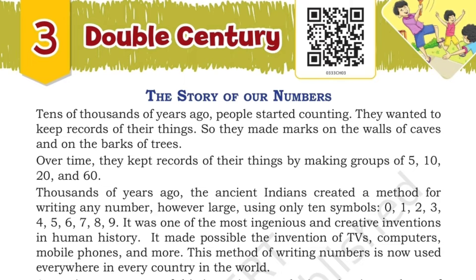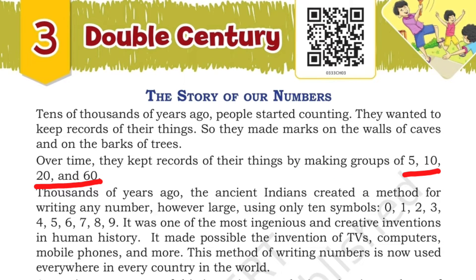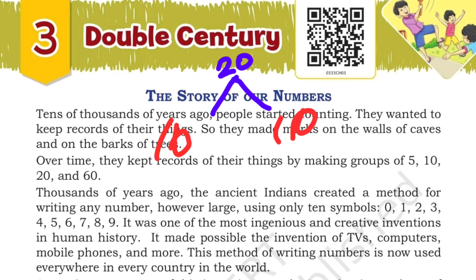Over time, they kept records of their things by making groups of 5, 10, 20, and 60. As time passed, they got many animals and found it difficult to count them one by one. So they divided them into groups of 5, 10, 20, and 60 — making counting very easy. For example, if they had 20 cows, they could divide them into 2 groups of 10 each: 10 plus 10 is 20. Like this, they started counting in groups.